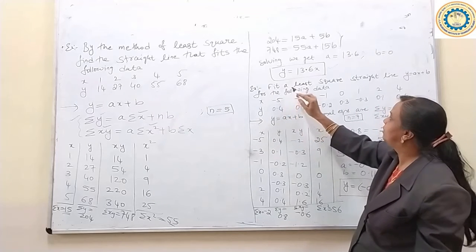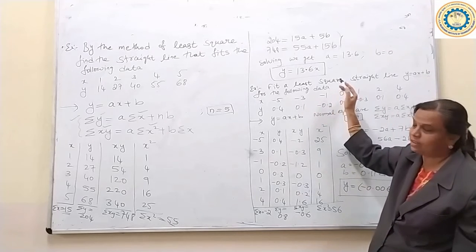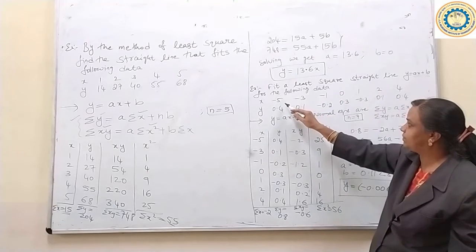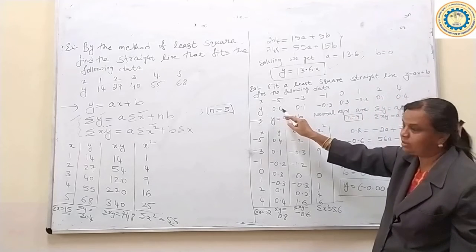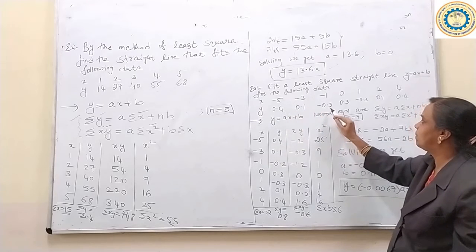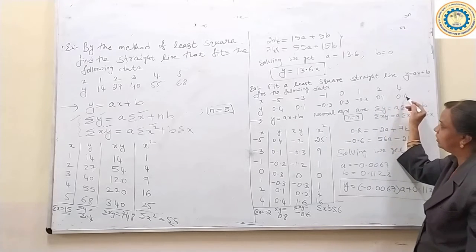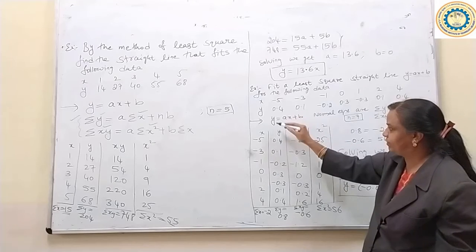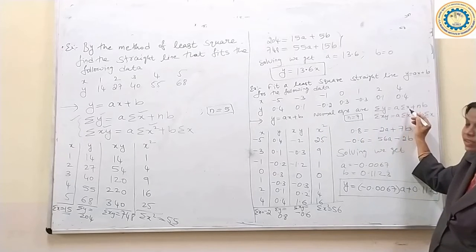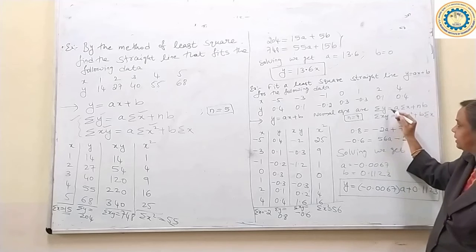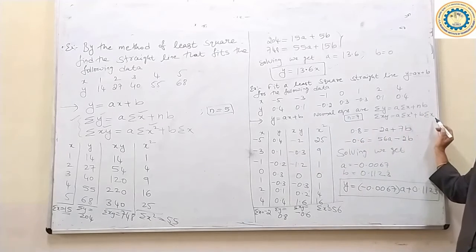Let us discuss example 2. Fit a least square straight line Y equal to AX plus B for the following data. X values are minus 5, minus 3, minus 1, 0, 1, 2, 4 and Y values are 0.4, 0.1, minus 0.2, 0.3, minus 0.3, 0.1, 0.4. The normal equations are: summation of Y equal to A into summation of X plus N into B, and summation of XY equal to A into summation of X square plus B into summation of X.